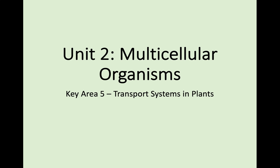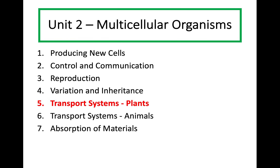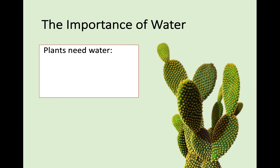Hi there everyone and welcome back to National 5 Biology. Today we're looking at Unit 2, Multicellular Organisms, and we're going on to Key Area 5, which is Transport Systems in Plants. We're going to be looking at plants and basically how they transport things through their system.